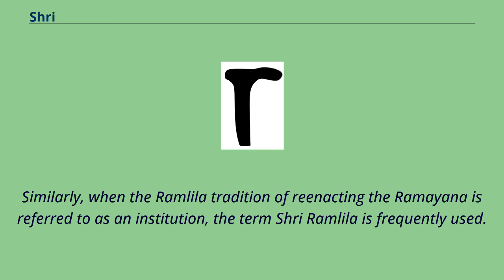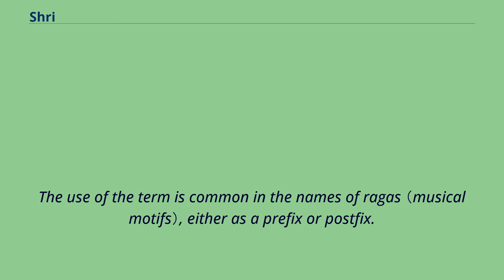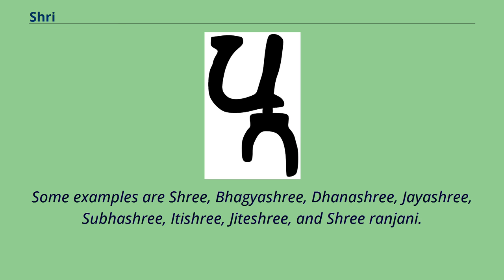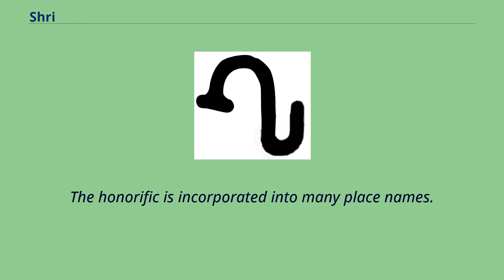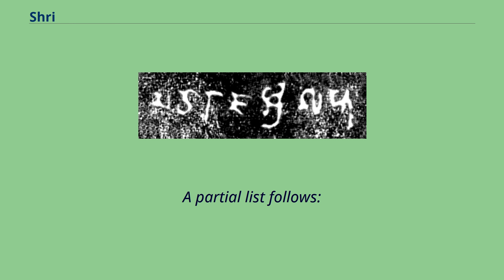Similarly, when the Ramlila tradition of re-enacting the Ramayana is referred to as an institution, the term Sri Ramlila is frequently used. The use of the term is also common in the names of ragas, either as a prefix or postfix. Some examples are Sri, Bhagyashri, Dhanashri, Deshri, Subhashri, Itishri, Jaitshri, and Sri Ranjani. The honorific is also incorporated into many place names.